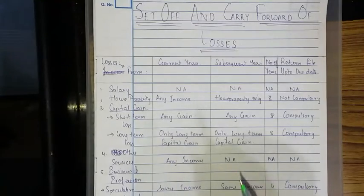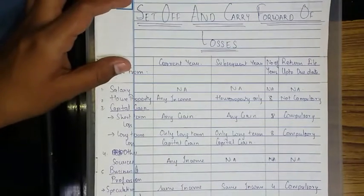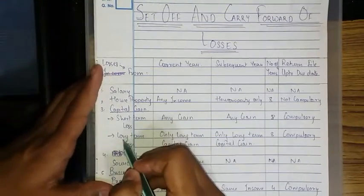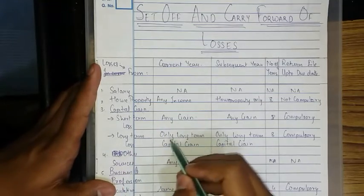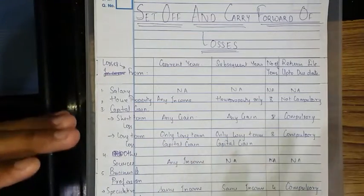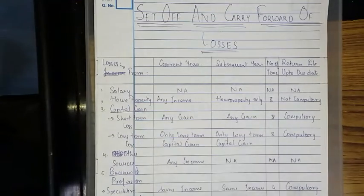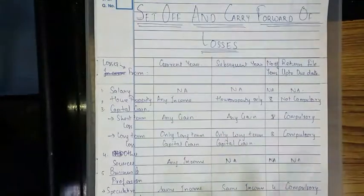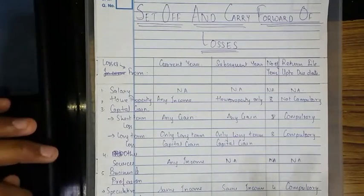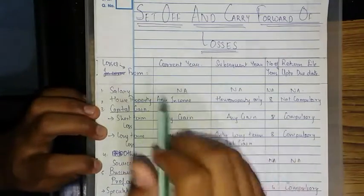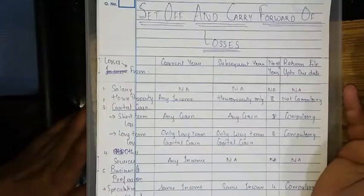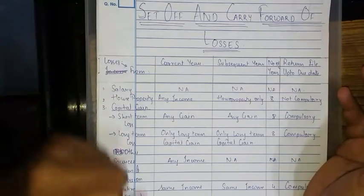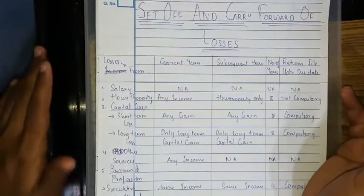In the case of long-term capital loss, a long-term capital loss will be deducted only from long-term capital gain — in the current year as well as in subsequent years. It cannot be deducted from short-term capital gain, because there is a fundamental difference in how long-term capital gain is taxed when calculating total income, which will be covered in the capital gains chapter.